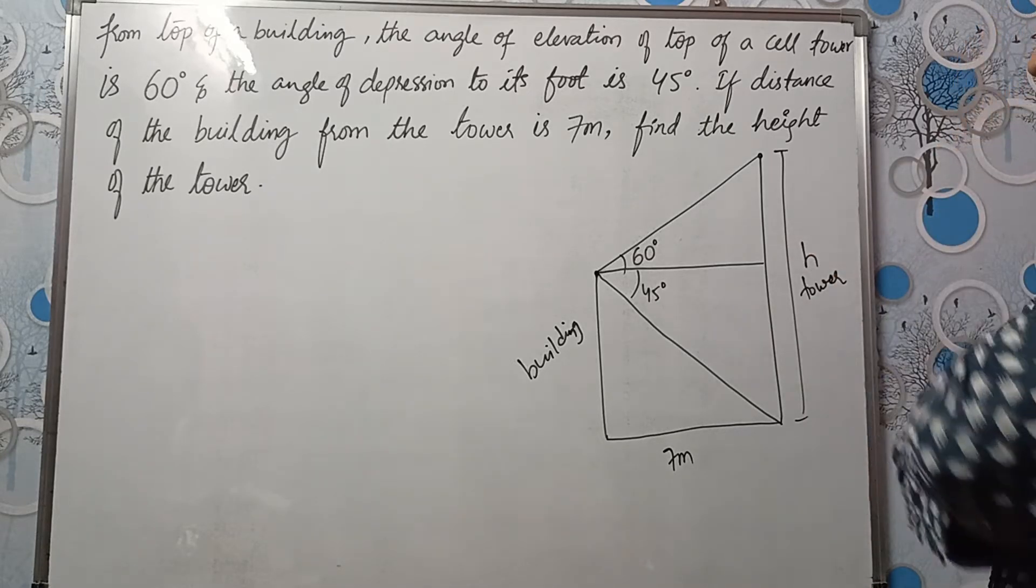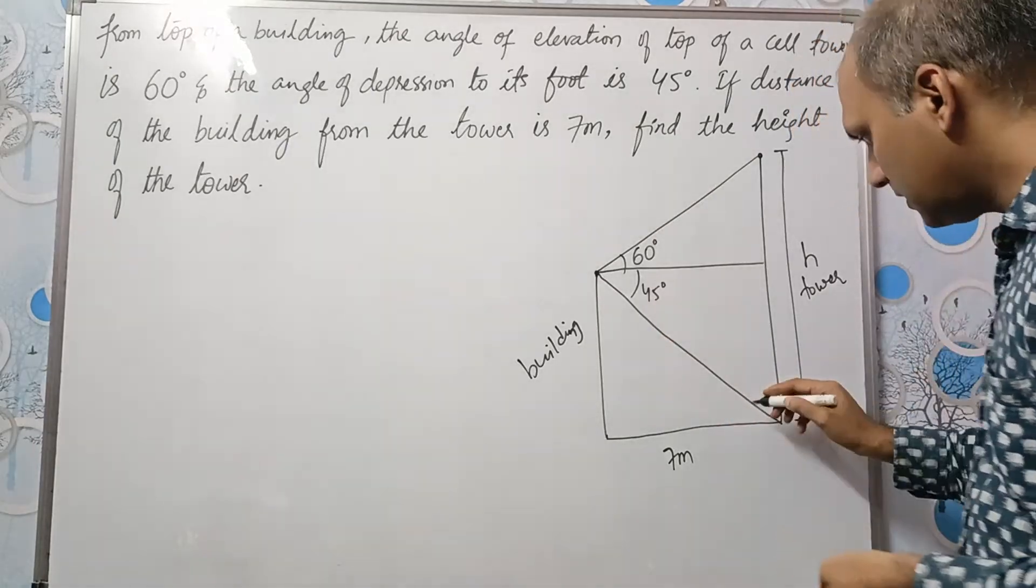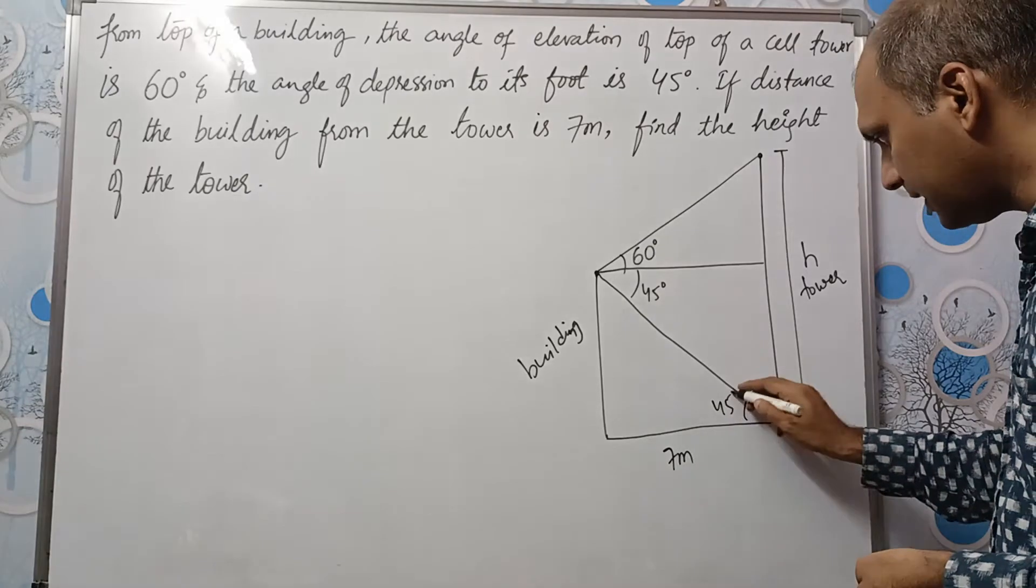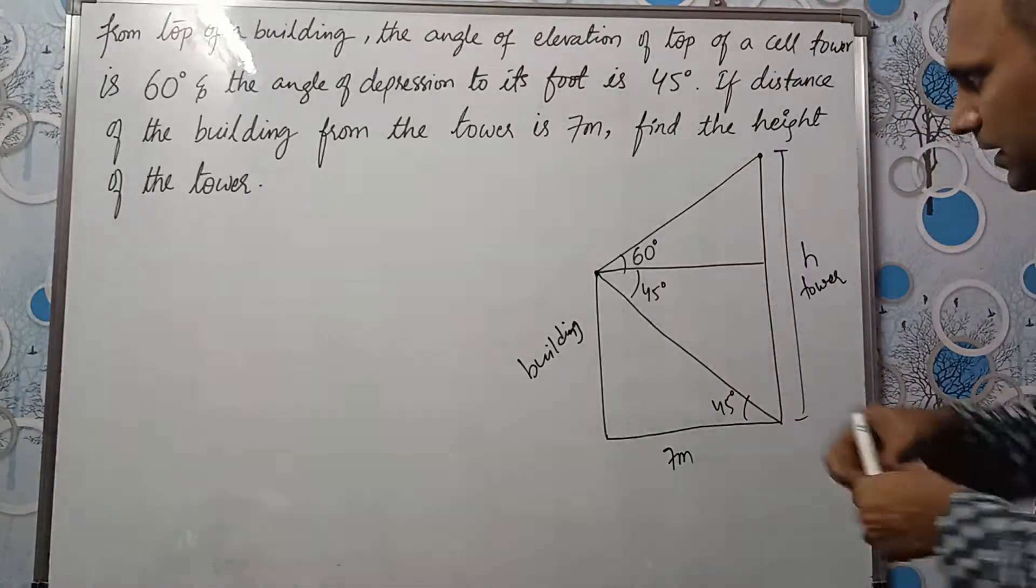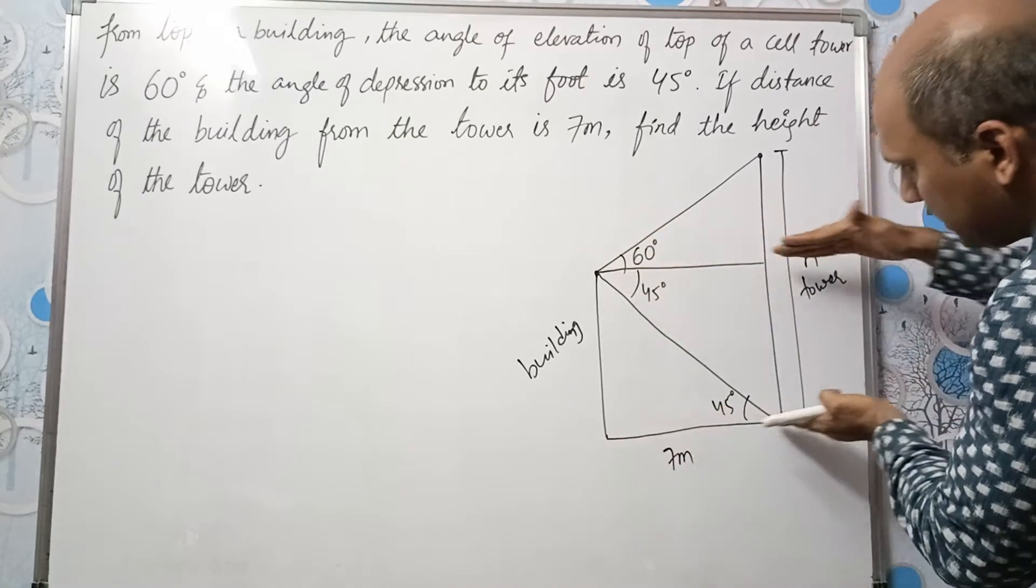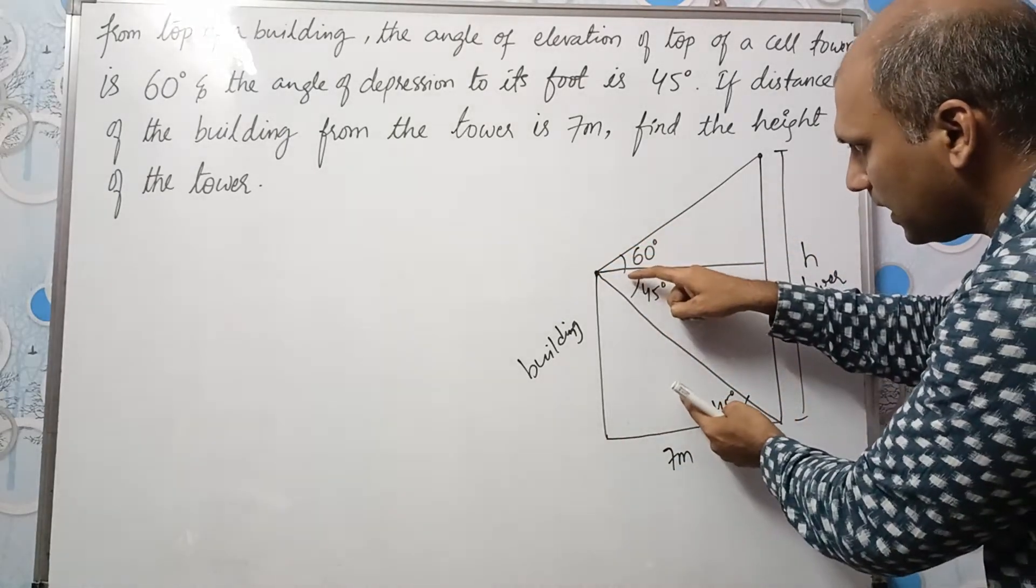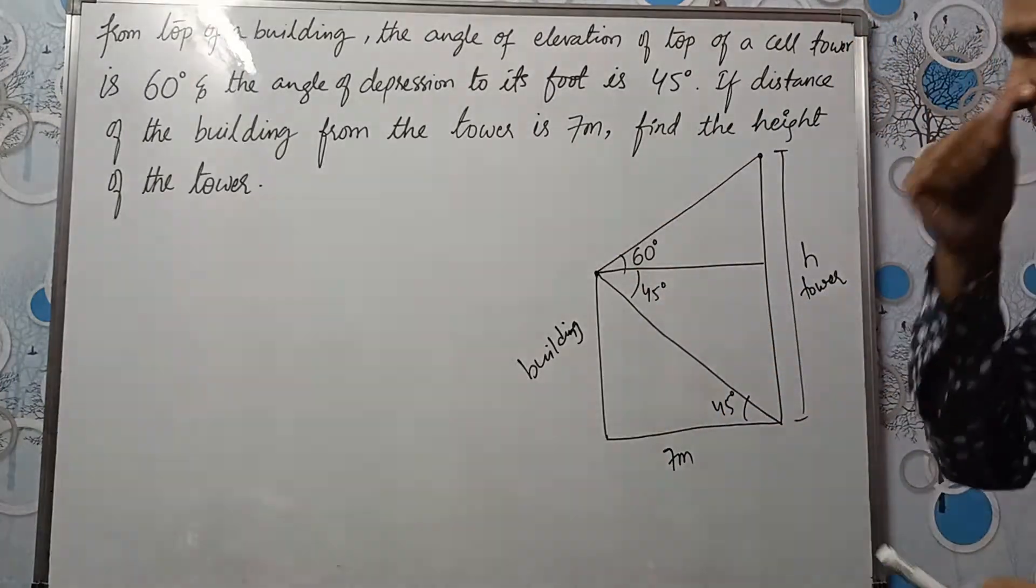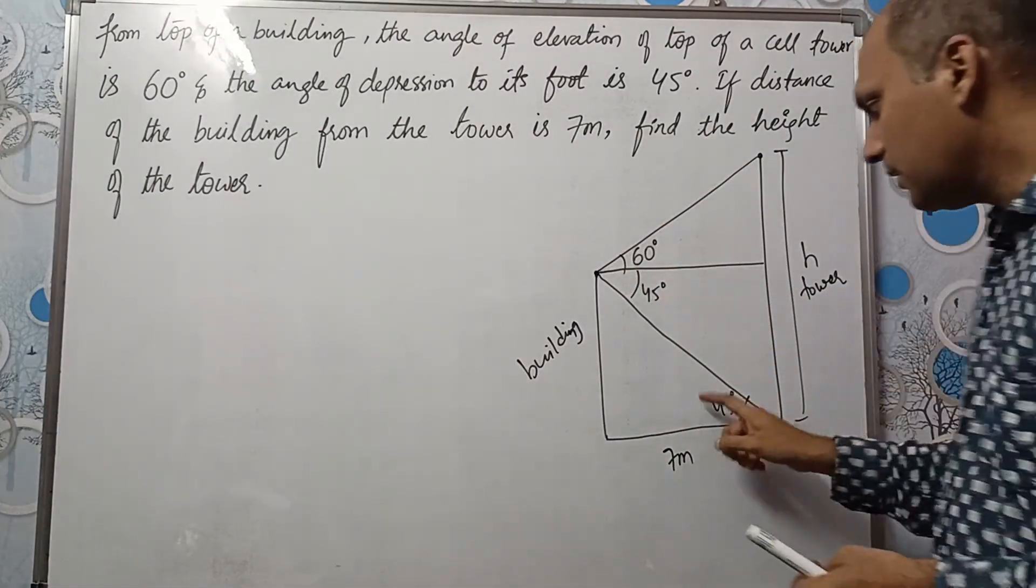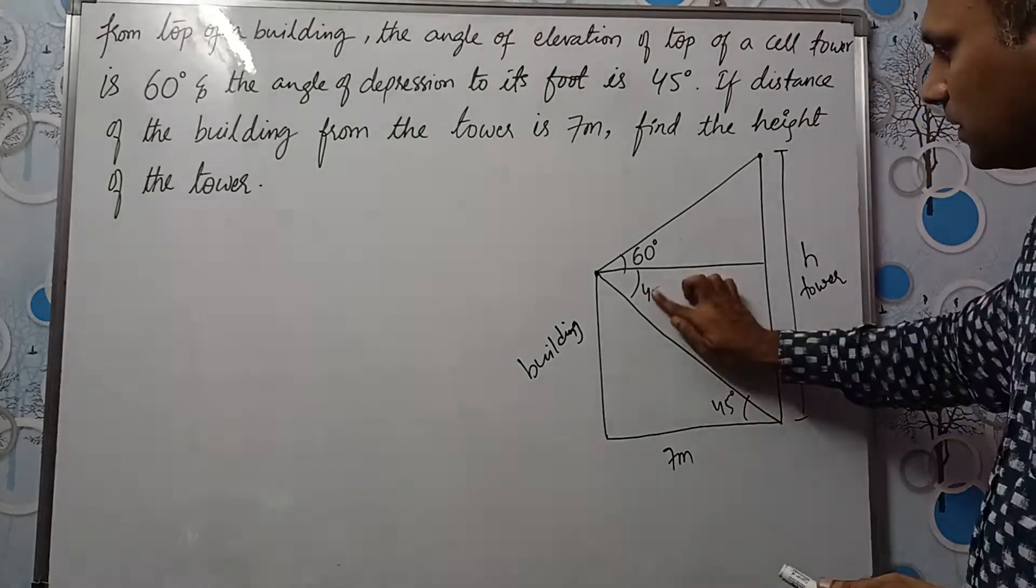Okay. What do we need to do now? See here. If this is 45 degrees, this will also be 45 degrees alternate interior angles. Because these two lines are parallel to each other. And this line is a transversal line. These two lines will be alternate interior angles. And in lower classes, we have studied that alternate interior angles will be equal. So if this is 45, this is also 45.